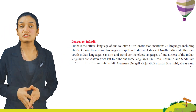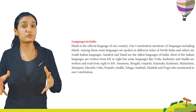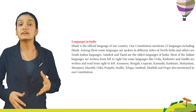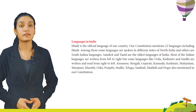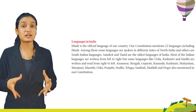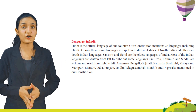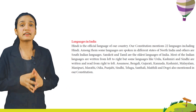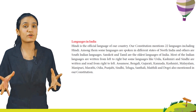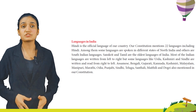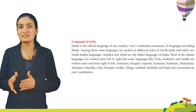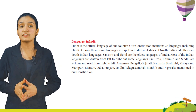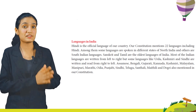Languages in India. Hindi is the official language of our country. Our constitution mentions 22 languages, including Hindi. Among them, some languages are spoken in different states of North India and others are South Indian languages. Sanskrit and Tamil are the oldest languages of India. Most of the Indian languages are written from left to right, but some languages like Urdu, Kashmiri, and Sindhi are written and read from right to left.